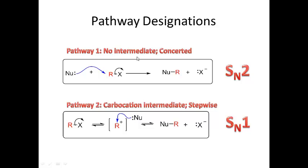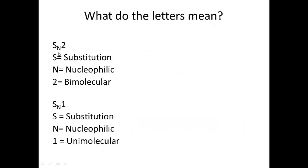To recap: when there's no intermediate and the mechanism is concerted — the nucleophile comes in attacking R while X leaves at the same time — we call that SN2. When X leaves first, leaving R as a carbocation, and then the nucleophile comes in and attacks R, we call that SN1. The letters mean: S is substitution, N is nucleophilic. The 2 in SN2 is bimolecular, relating to the rate of reaction. The 1 in SN1 is unimolecular — the rate is first order and depends only on the substrate, not the nucleophile.